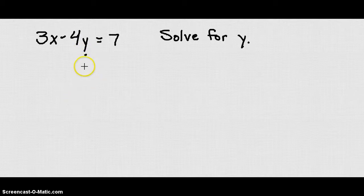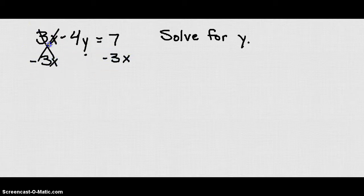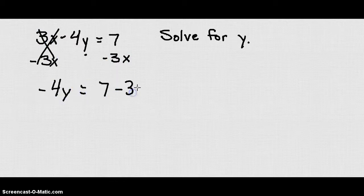To isolate y, what we're going to do is first get this term by itself. So let's get the 3x on the other side by subtracting it from both sides. We're going to get negative 4y equals 7 minus 3x.